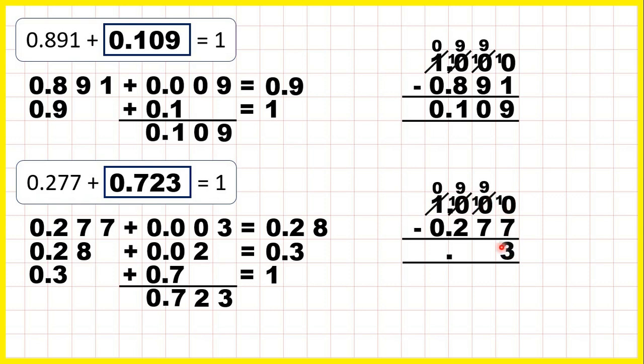and now 10 minus 7 is 3, 9 minus 7 is 2, 9 minus 2 is 7, 0 minus 0 is 0. So, we get the same answer, 0.723.